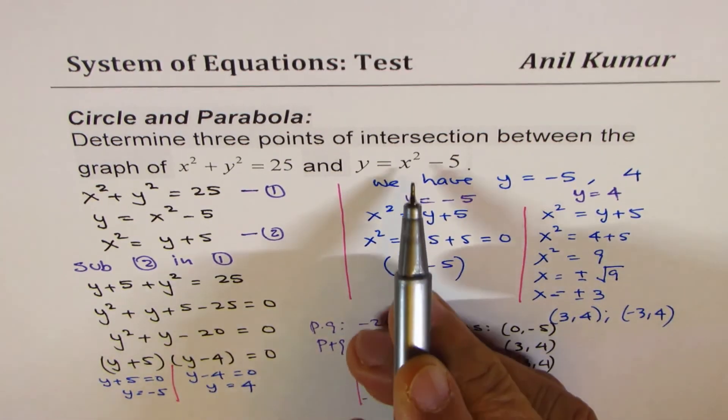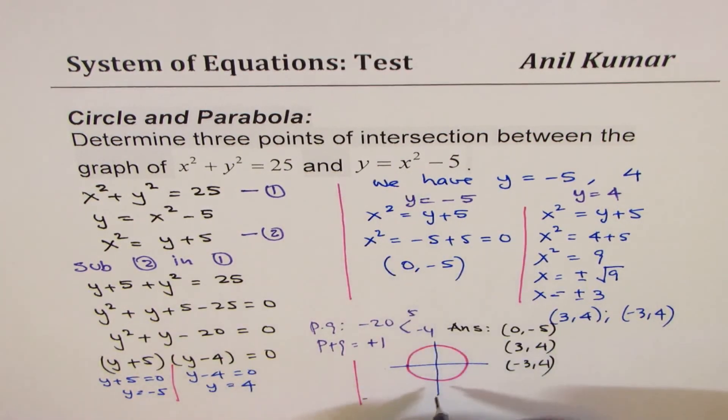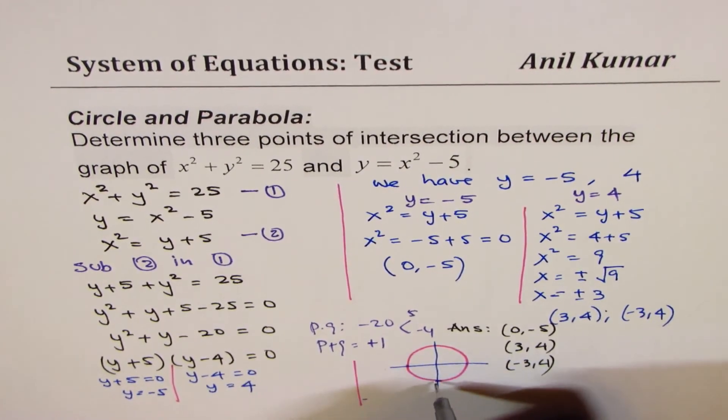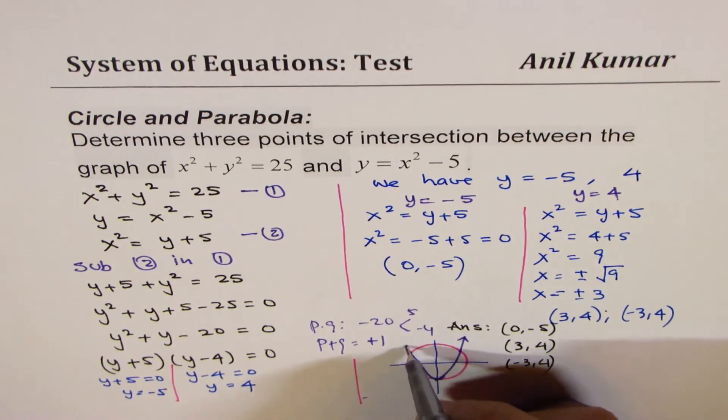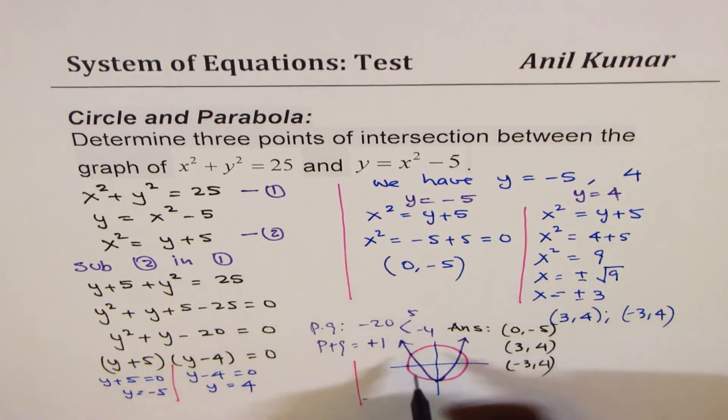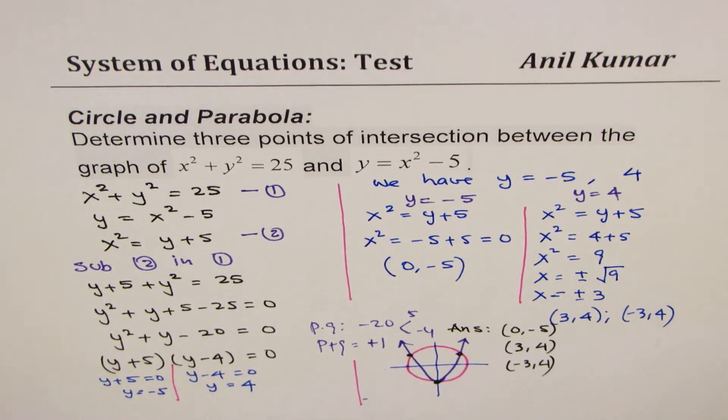As far as the parabola is concerned, x squared minus 5, so this point is minus 5 for us. We see that it intersects somewhere there. It's a parabola which is like this. And these are the points of intersection: 1, 2, and 3. That is how you could visualize it.